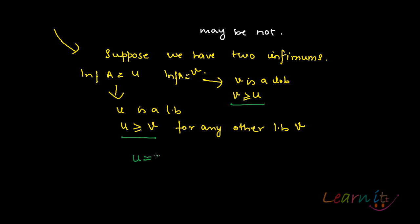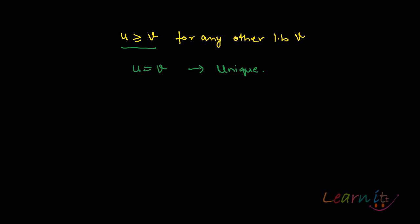From u ≥ v and v ≥ u, we conclude that u must equal v. This proves that the infimum is unique for any set. So remember: you can have many lower bounds, but the infimum is unique — just as you can have many upper bounds but the supremum is unique.